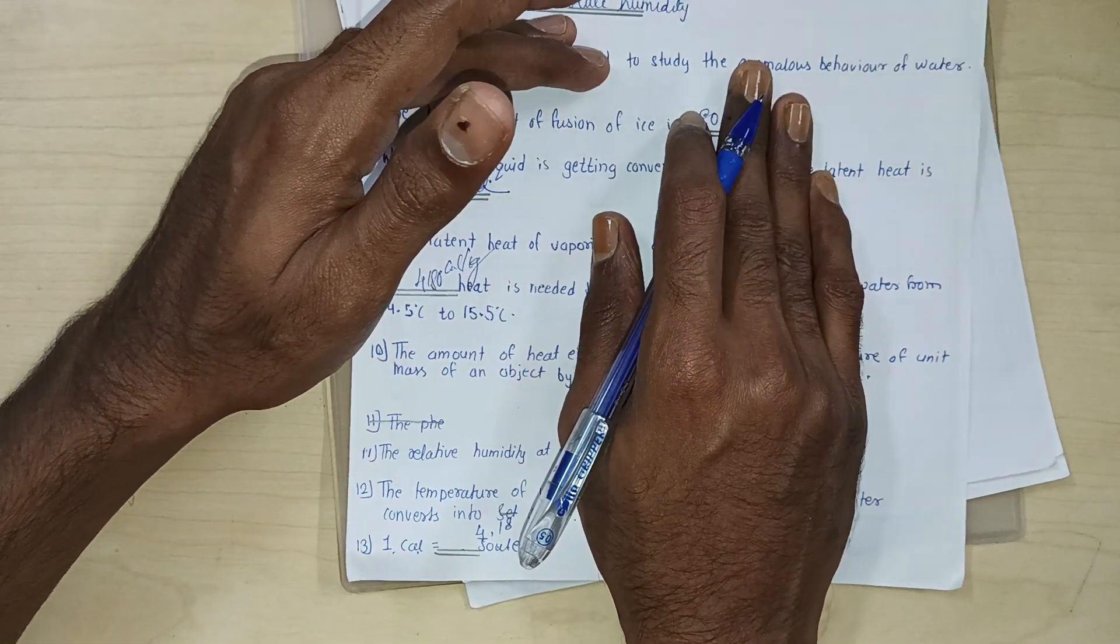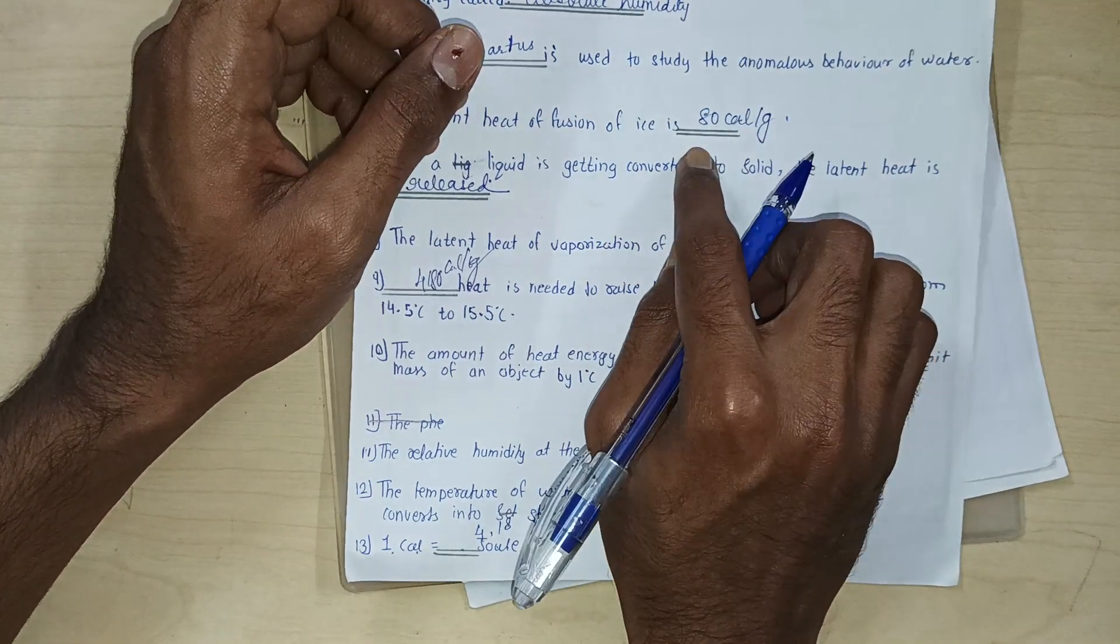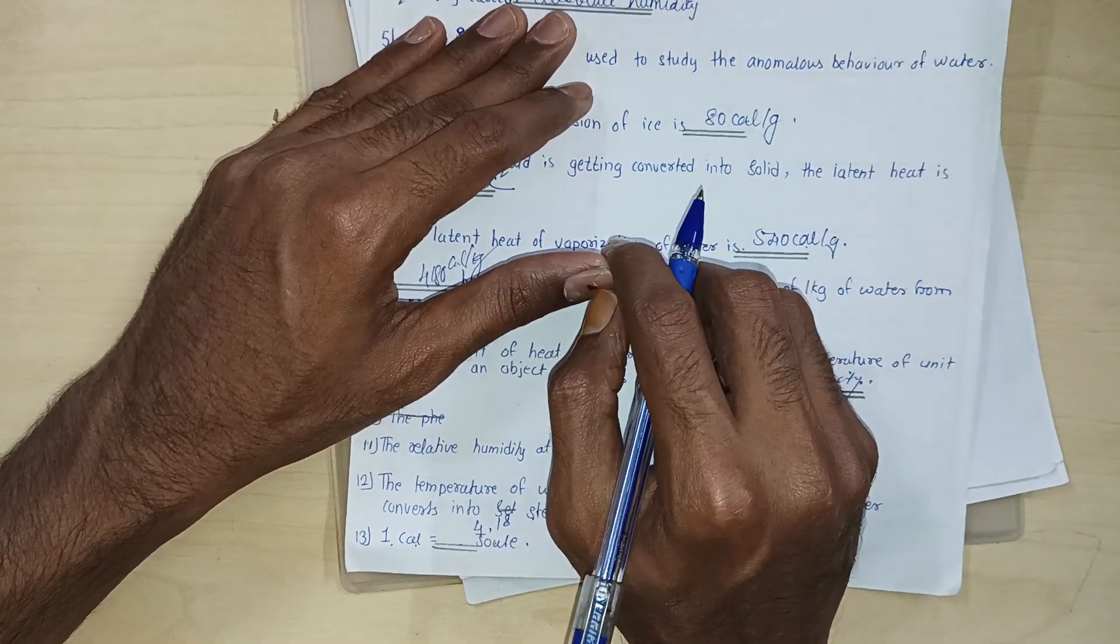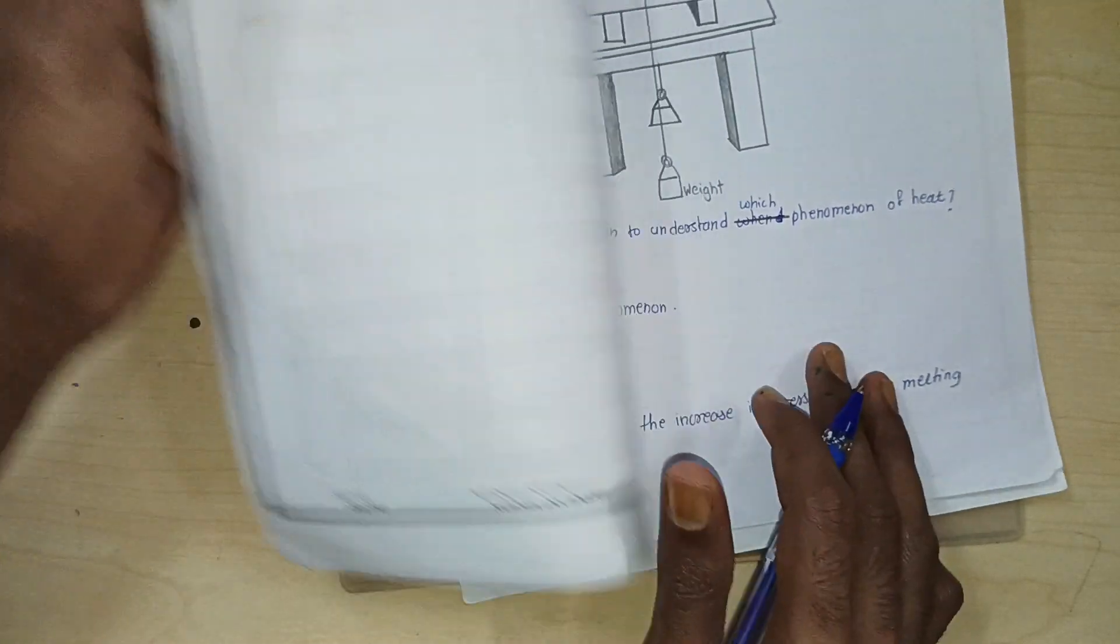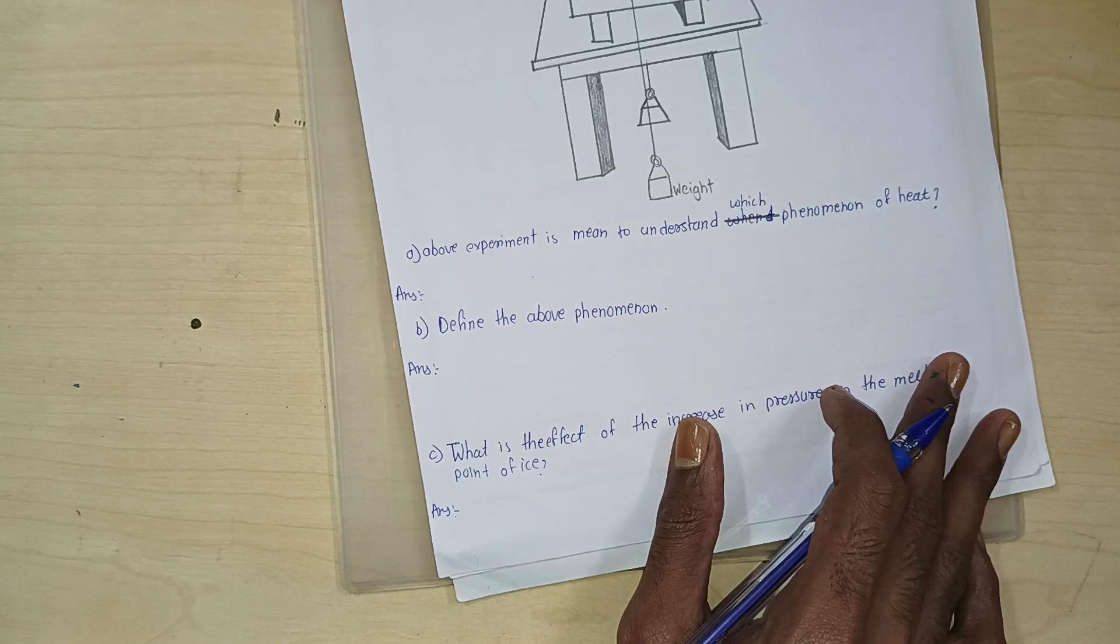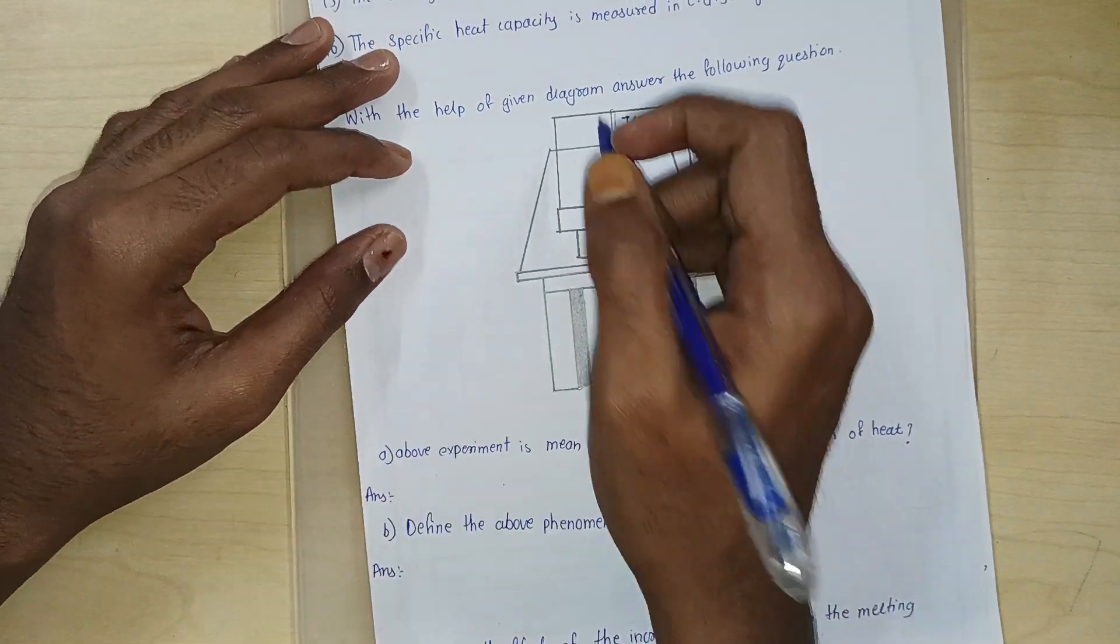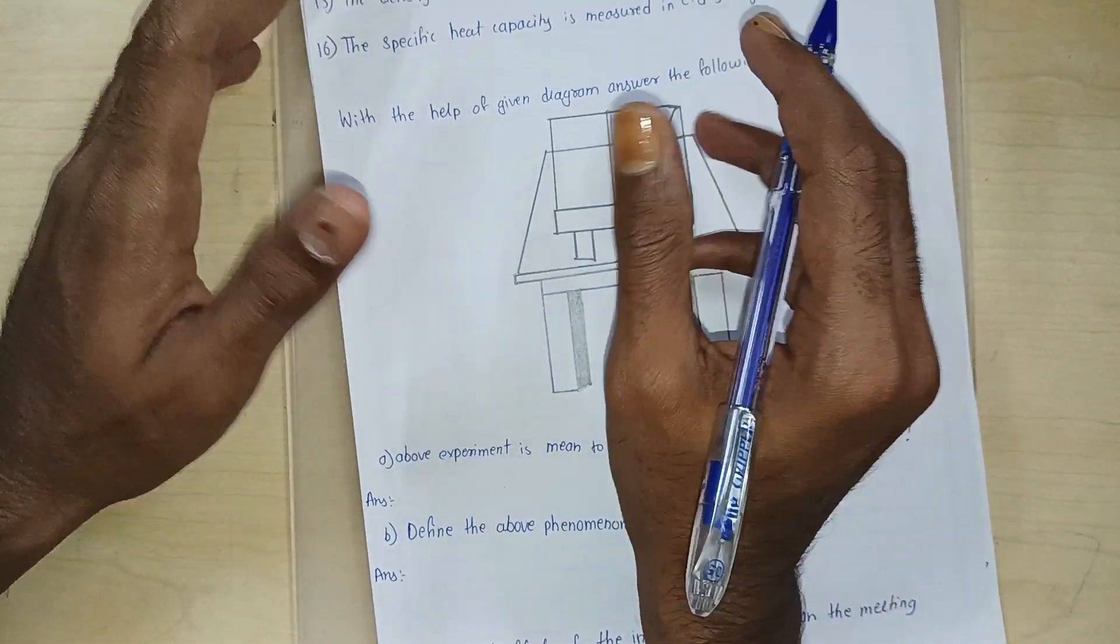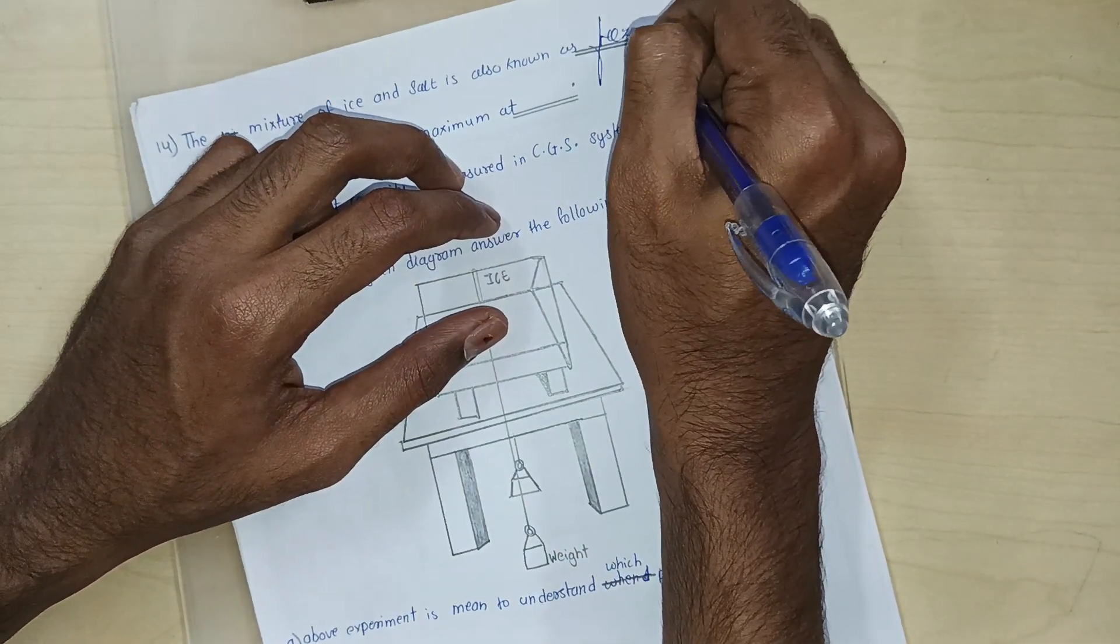The latent heat of fusion of ice is 80 calories per gram. Dash is used to study the anomalous behavior of water. Hope's apparatus. Next question is mixture of ice and salt is also known as dash. Freezing mixture.